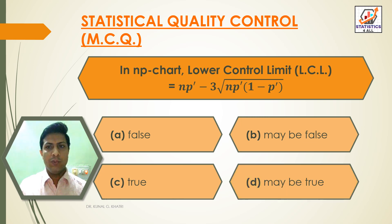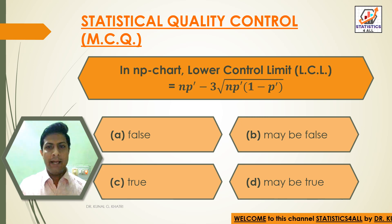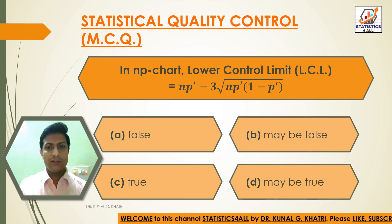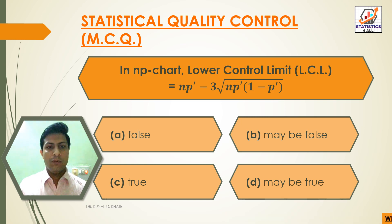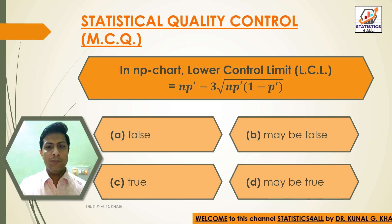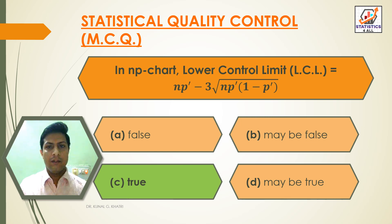Next question: in NP chart, lower control limit LCL is equal to NP' minus 3 into under root NP' into bracket (1 minus P'). Option A: false, Option B: may be false, Option C: true, Option D: may be true. Answer: Option C — true. In NP chart, LCL is equal to NP' minus 3 into under root NP' into bracket (1 minus P').